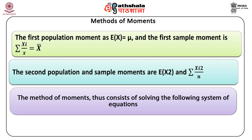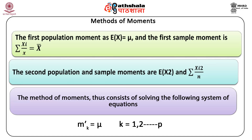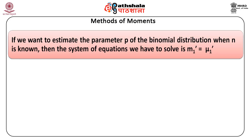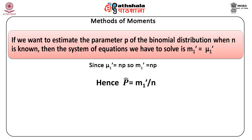The method of moments thus consists of solving the following system of equations: m'k = mu'k, where k = 1, 2, ..., p, for the p parameters of the population. Example 1: if we want to estimate the parameter p of the binomial distribution when n is known, then the system of equations we have to solve is m'1 = mu'1. Since mu'1 = np, so m'1 = np. Hence, p-hat = m'1 / n.